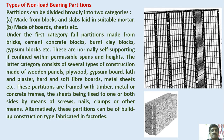The latter category consists of several types of constructions made of wooden panels, plywood, gypsum boards, lath and plaster, hard and soft fiber boards, metal sheets, etc. These partitions are framed with timber, metal, or concrete frames, the sheets being fixed to one or both sides by means of screws, nails, clamps, and other means. Alternatively, these partitions can be of built-up construction type, fabricated in factories.